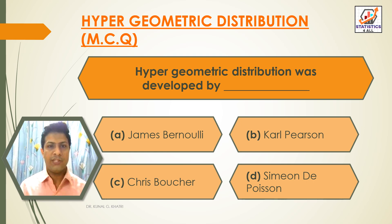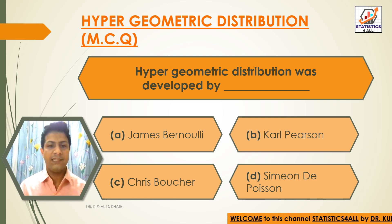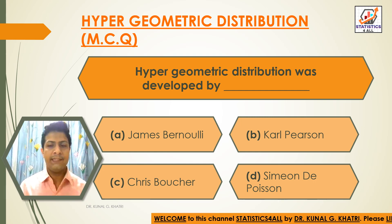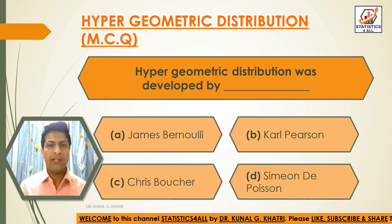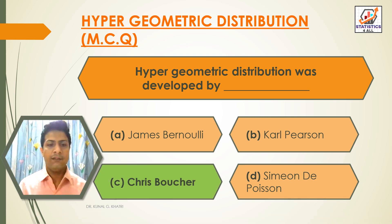First question: Hypergeometric distribution was developed by — Option A: James Bernoulli, Option B: Carl Pearson, Option C: Chris Boucher, Option D: Simon De Poisson. The answer is Option C — Chris Boucher. Hypergeometric distribution was developed by Chris Boucher.